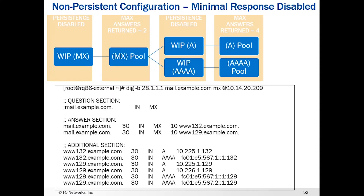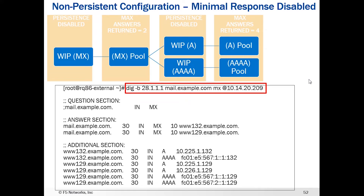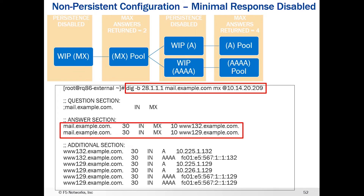Let's look at a non-persistent configuration with minimal response disabled, meaning the GTM is going to try to fill in as much of the additional answer section as it can. In this example, persistence is disabled at the wide IP level. The maximum answers returned at the pool level is set to 2, and this is an MX type returning wide IPs — an A and a Quad-A — with persistence disabled on both and max answers return equal to 4 for each. If we run this DIG query against that mail.example.com MX record, we get back two answers: www.132 and www.129.